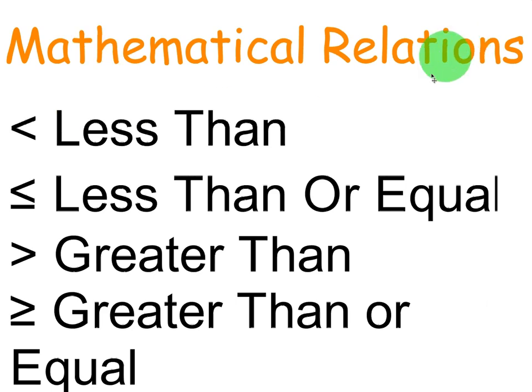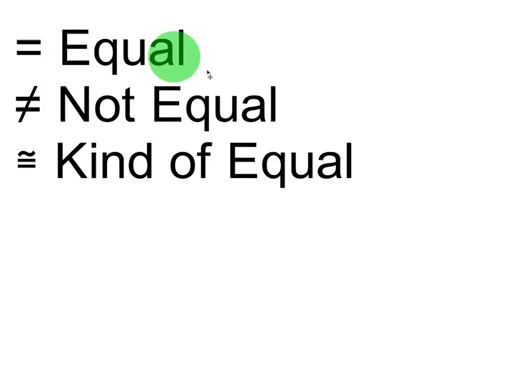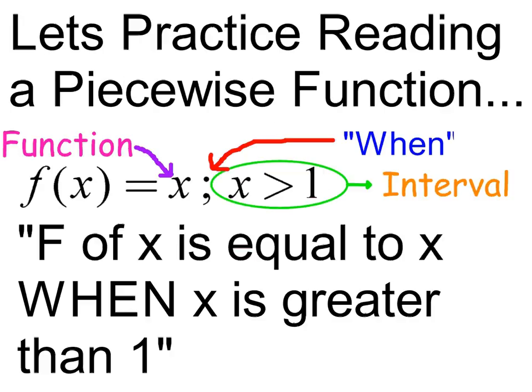Let's review some mathematical relations. This means less than. This means less than or equal to. This means greater than. This means greater than or equal to. This means equals. This means not equal, and this means approximately equal. So you need to know these symbols as we move on to this lesson.